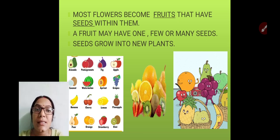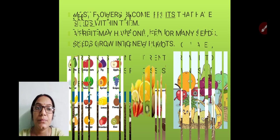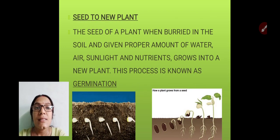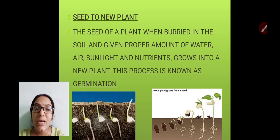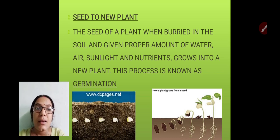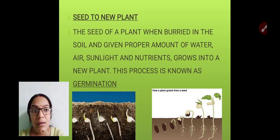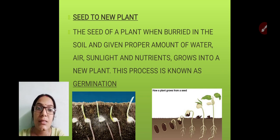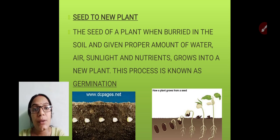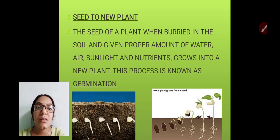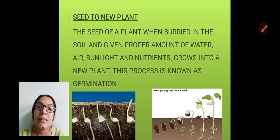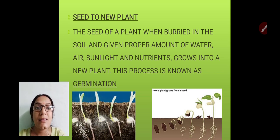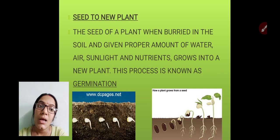Let us see how seeds grow into new plants. This happens by the process of germination. When the seed of a plant is buried in the soil and given a proper amount of air, sunlight, and nutrients, it grows into a new plant. In this process, a seed first becomes a seedling, and then the seedling grows into a new plant.